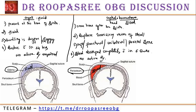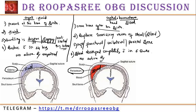No active treatment is required for either. Caput is a cap with fluid; cephalohematoma is head with blood. Caput is present at the time of birth; cephalohematoma is seen after some time. In caput, fluid is accumulated; in cephalohematoma, blood. Caput is a diffuse boggy swelling not limited by suture lines. Cephalohematoma is soft, fluctuant, unilateral, over the parietal bone, and limited by sutures. Caput resolves within 24 hours; cephalohematoma within 6 to 8 weeks.